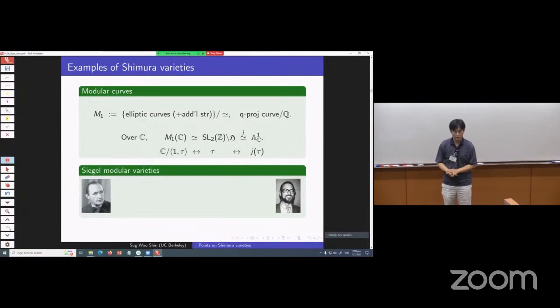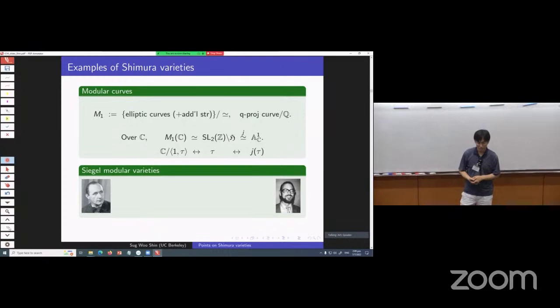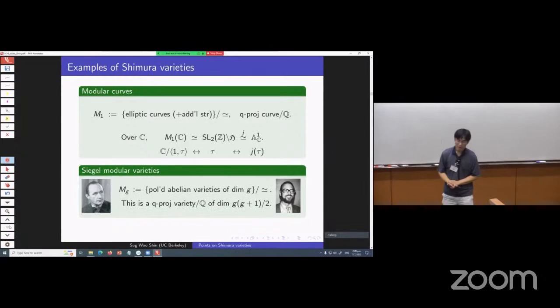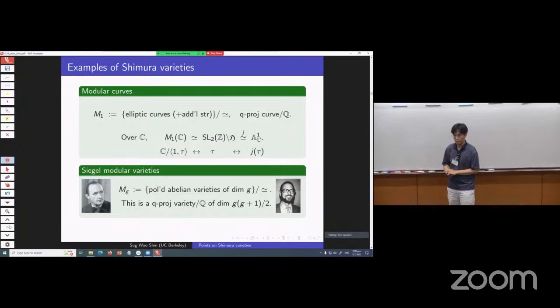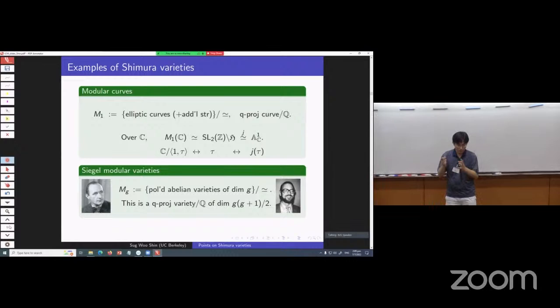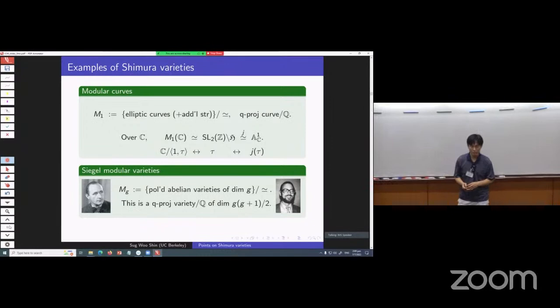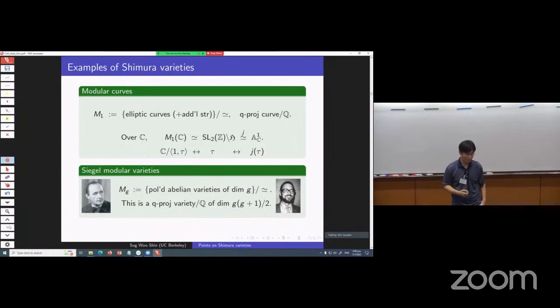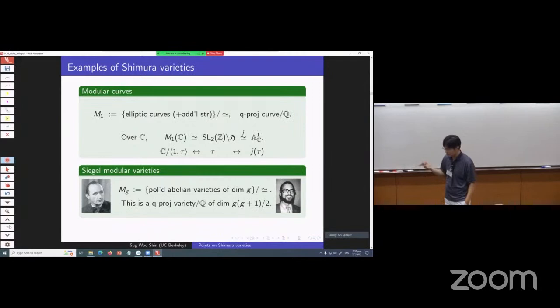In higher dimensions, you have Siegel modular varieties. In this case you consider the moduli space of polarized abelian varieties of dimension g. With additional structures, you get a quasi-projective variety over Q of dimension g(g+1)/2. When g=1, you recover modular curves. These are some Shimura varieties you want to keep in mind.